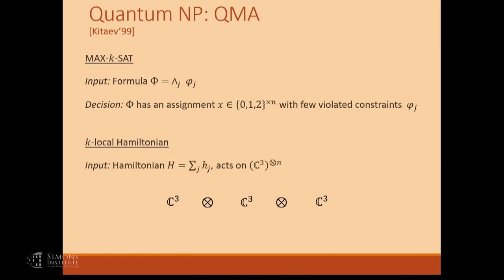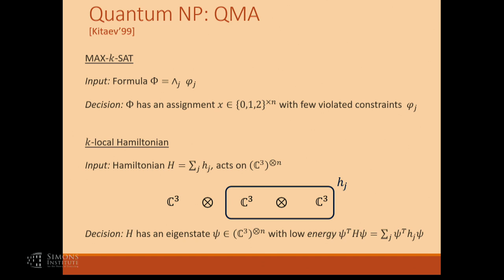You can think of this, mathematically, as a projection operator that assigns a penalty of one to states you don't like and a penalty of zero to states you do like. If this projection operator is diagonal in the computational basis, you recover classical. These are strict generalizations of classical constraints. Our goal, given the input, is to determine what is the smallest eigenvalue of this matrix — in physics language, the smallest energy of the system. We're trying to determine whether this matrix has an eigenstate with low enough overlap — that corresponds to a small eigenvalue.